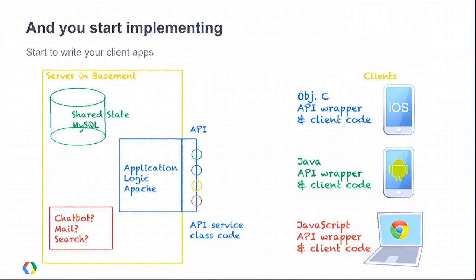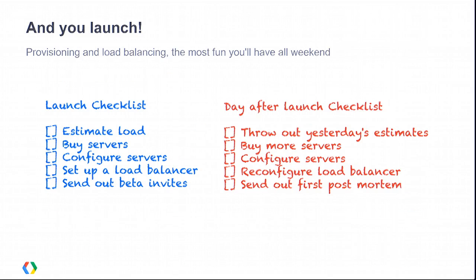We're smart developers, we've got this working, our app is ready to launch, the client apps are talking to this backend, and everything works. So we launch. Before launch we probably do some fancy math to figure out what our load is going to look like and how to provision. But it turns out that being good at math is not the same thing as being able to predict the future. Chances are you're either going to over-provision, or you're going to end up having some really fun downtime and getting to send out your first postmortem to your beta users.